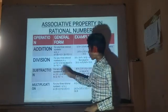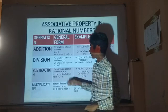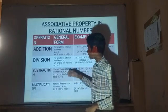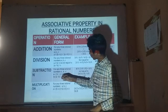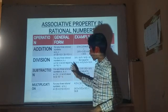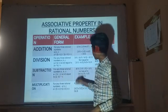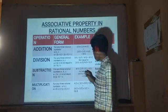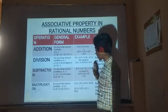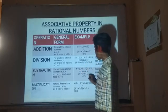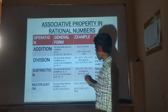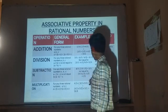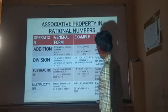Associative Property — Subtraction: for any three ratio numbers A, B, C, A minus (B minus C) is not equal to (A minus B) minus C. For example, 4 by 5 minus (2 by 5 minus 1 by 5) equals 3 by 5, which is not equal to (4 by 5 minus 2 by 5) minus 1 by 5, which equals 1 by 5. So ratio numbers are not associative under subtraction.